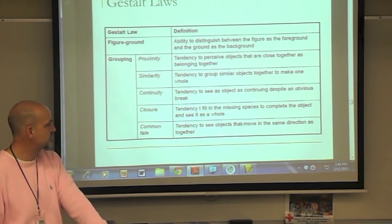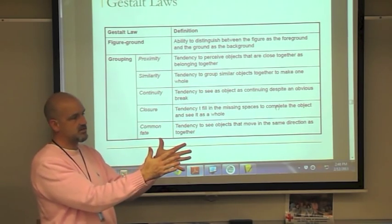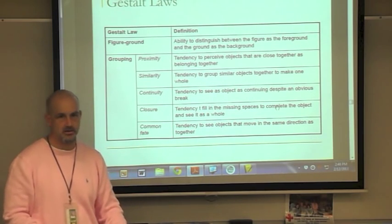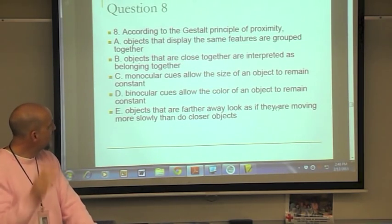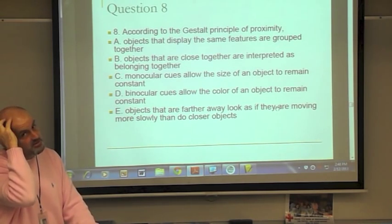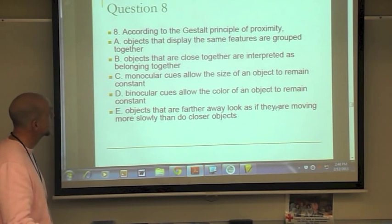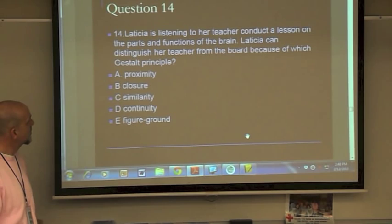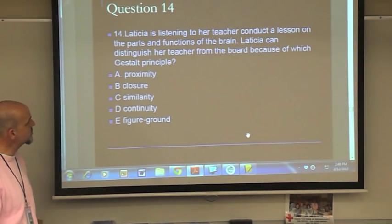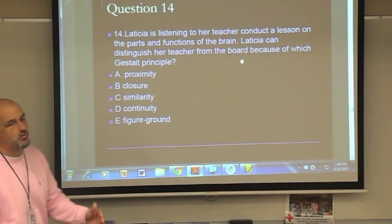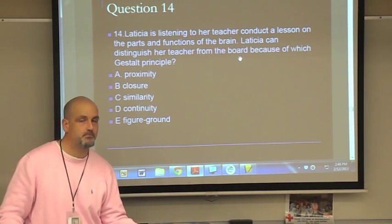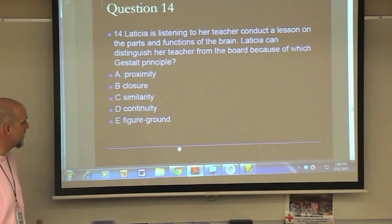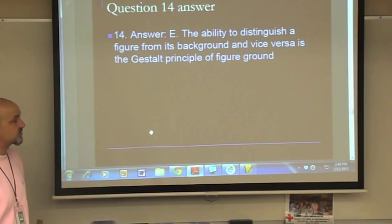Common fate is the tendency to see objects moving in the same direction as belonging together — two cars going in the same direction are grouped. Practice questions: Proximity groups objects that are close together, so the answer is letter B — objects close together are interpreted as being together. Figure-ground is what allows Leticia to distinguish her teacher from the board — separating the object from the background — so the answer is letter E.